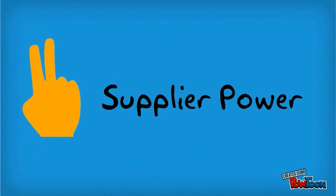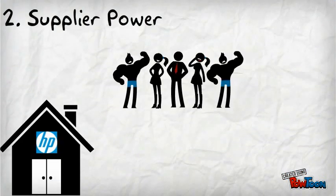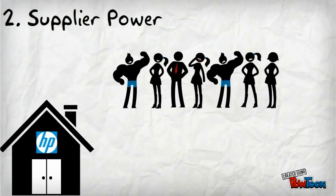The second one is supplier power. This means how easy is it for suppliers to drive up the prices. This is mainly driven by the number of suppliers of each key input, the uniqueness of their product or service, the strength and control over you, and the cost of switching from one to another. For example, in this case, HP suppliers have high power.